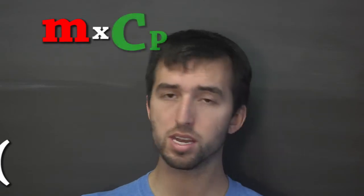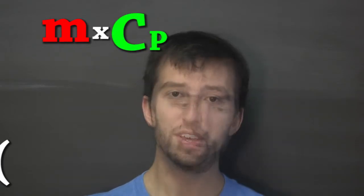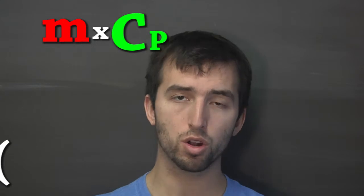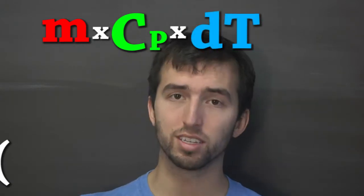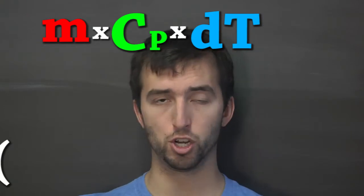So, let's talk about each one of those variables. M stands for mass, as we already talked about. CP stands for specific heat. This is constant based on the chemical or compound that you are using. And DT, or delta T, is the change in temperature.